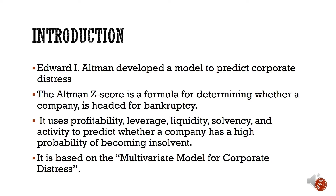The Altman Z-Score model was developed by Edward I. Altman in 1968 to predict corporate distress. The Altman Z-Score is actually a formula for determining whether a company is headed for bankruptcy. It uses profitability, leverage, liquidity, solvency, and activity ratios to predict whether a company has a high probability of becoming insolvent in the near future.